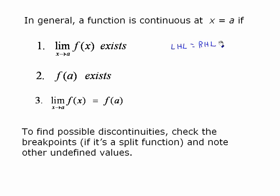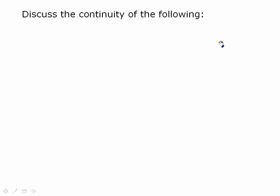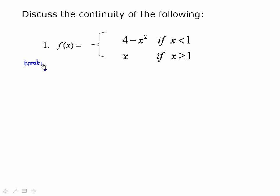To find possible discontinuities, check the breakpoints, because most of these are going to be split functions. Also note any other undefined values. So let's get into a couple of questions. Discuss the continuity of the following — that's typically how these are worded. f(x) = 4 − x² if x < 1, then x if x ≥ 1. We need to check the breakpoints, and the breakpoint here is x = 1. There is no other possible discontinuity — no denominators or that sort of thing.